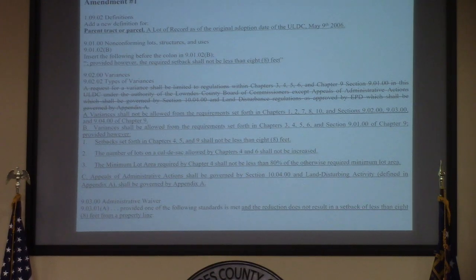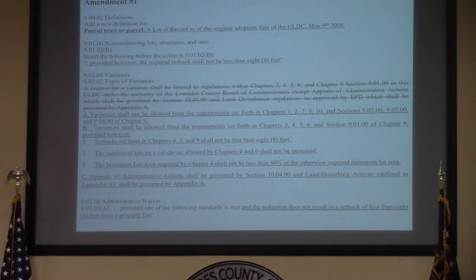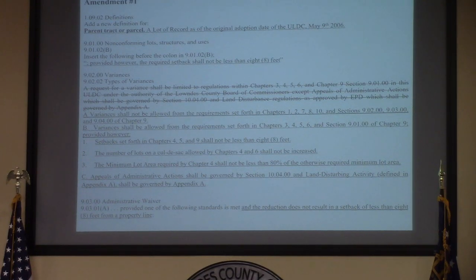The first amendment, as we discussed yesterday, touches many sections that ultimately deal with not being able to reduce a setback for a side yard less than 8 feet. If any setback were to be reduced less than 8 feet, you would have to go through a planned development process, which the board would then have to approve at a public hearing.